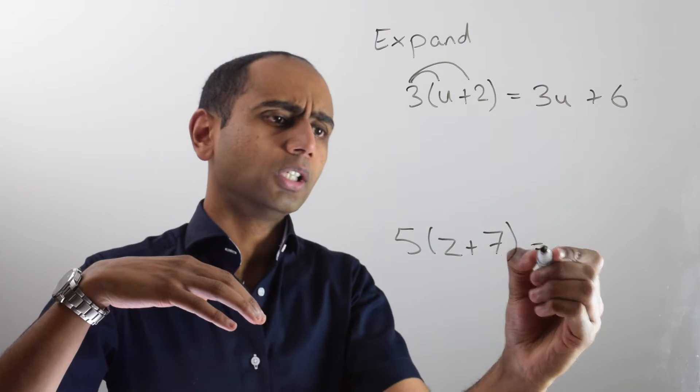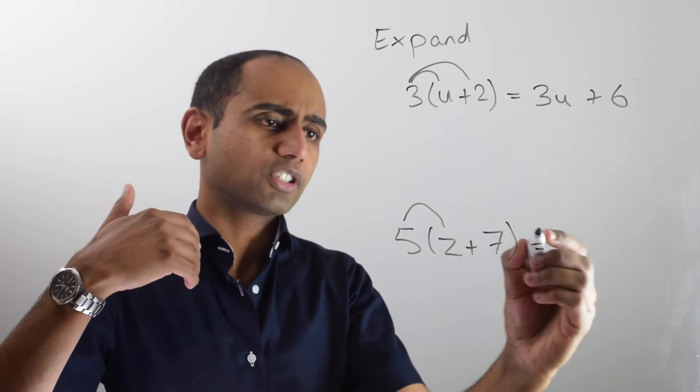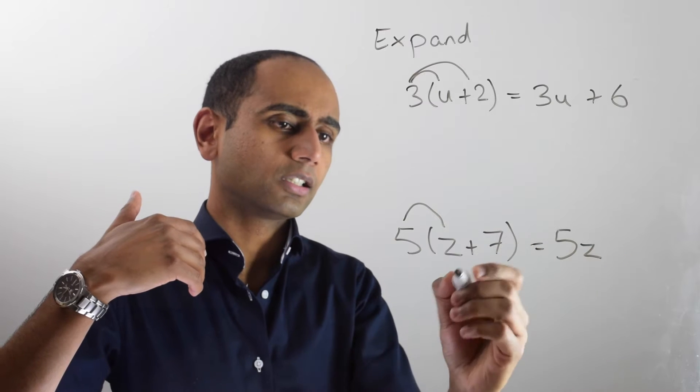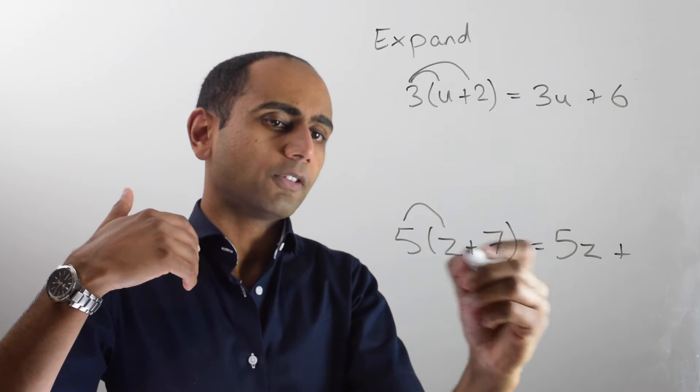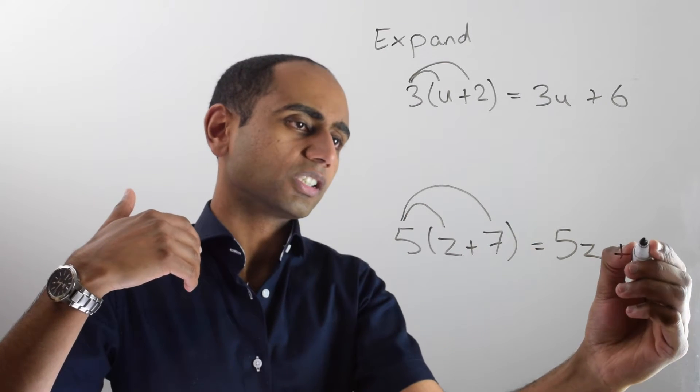In this example I'm going to do the same thing. 5 times z is 5z. I'm going to add on five lots of 7, which is 35.